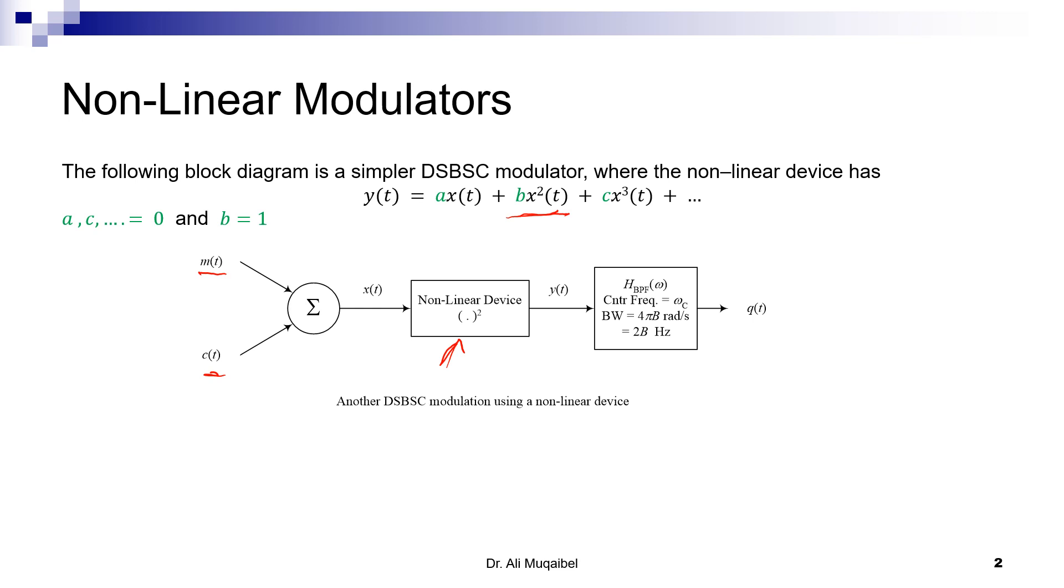then they go through the squarer. What you get at the output is [M(t) + C(t)]², the sum squared. The output of the squarer will be M² + 2MC + C². You can see that the first term here is a low-frequency term; this one is a very high-frequency term because cosine squared will give you double the angle.